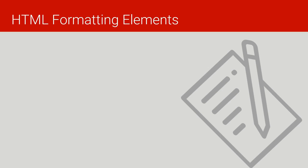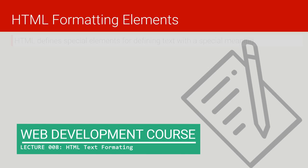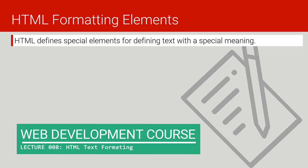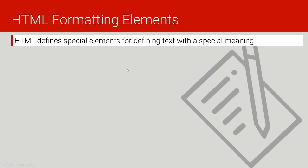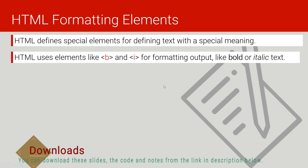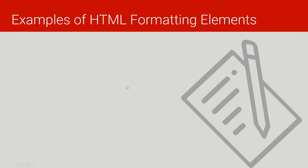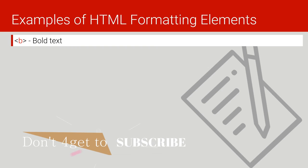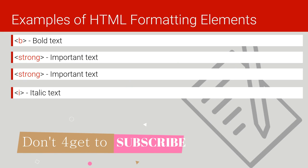HTML defines special elements for defining text with a special meaning. HTML uses elements like the B tag and I tag for formatting output like bold and italics. Here are some examples of formatting elements available in HTML: we have the B tag, the strong tag, the italic tag.